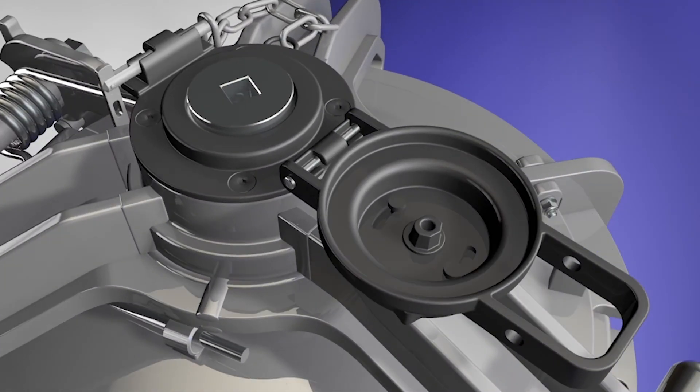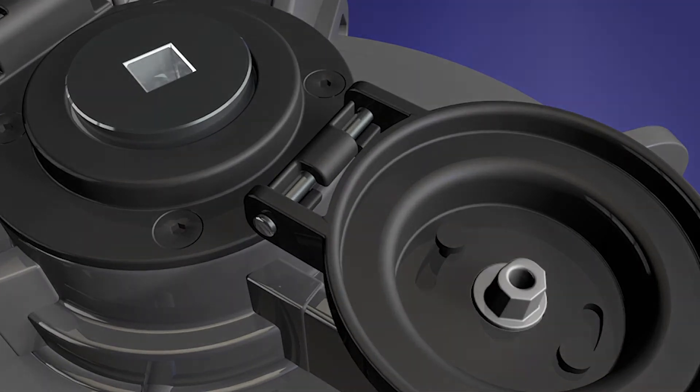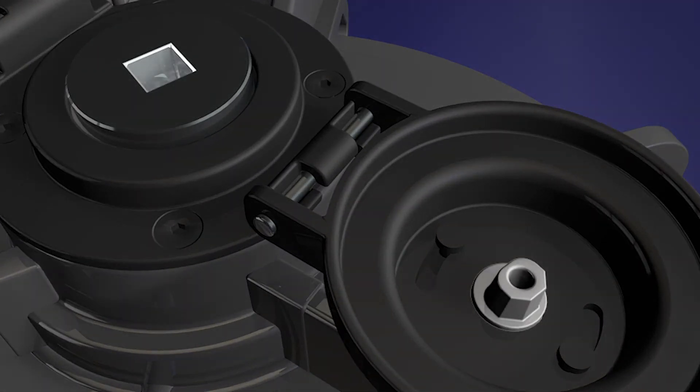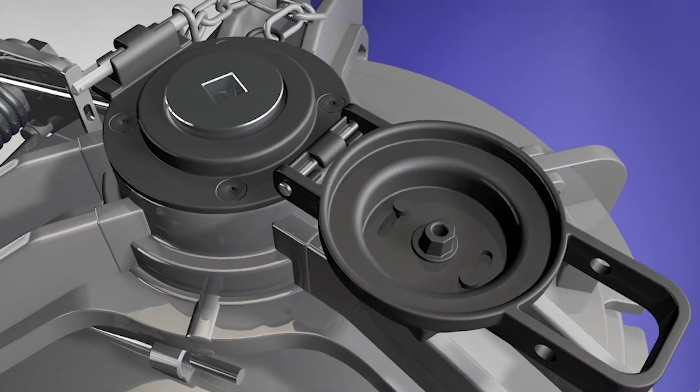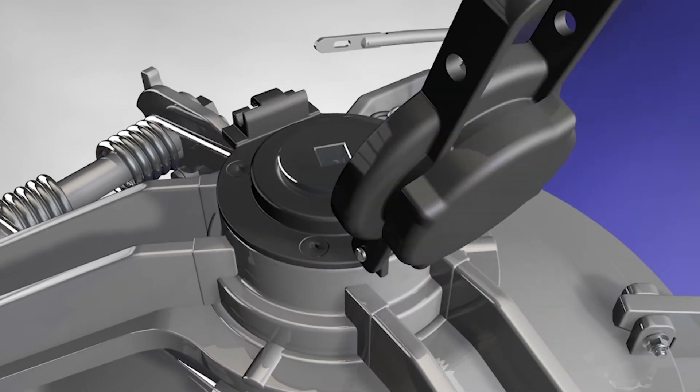A protruding feature on the inside of the weather cap corresponds to a female socket on the ram. These features engage when the cap is closed to lock the ram in place and prevent it from back driving.